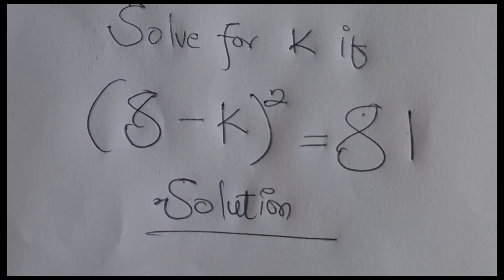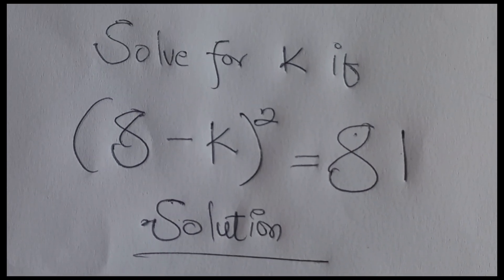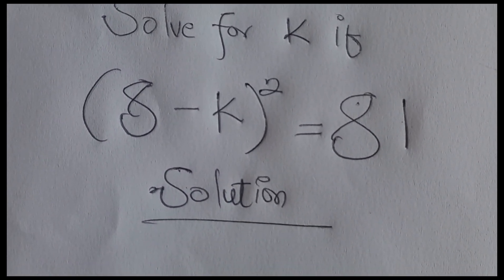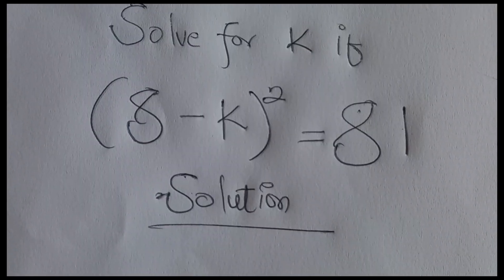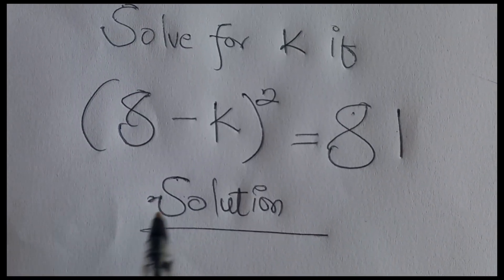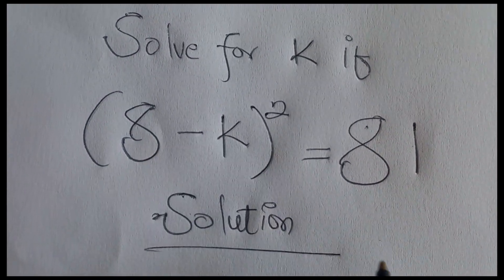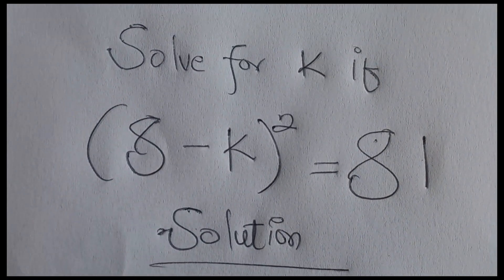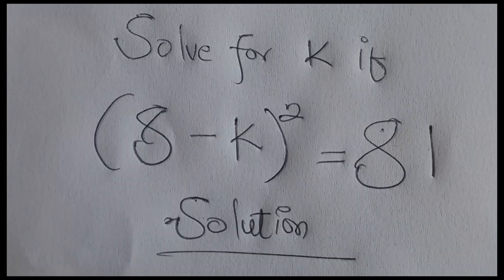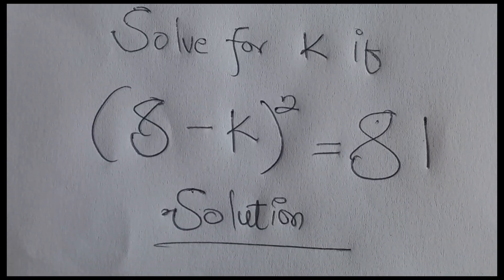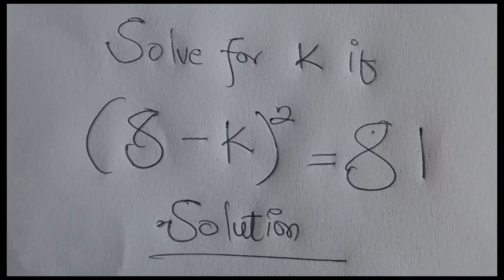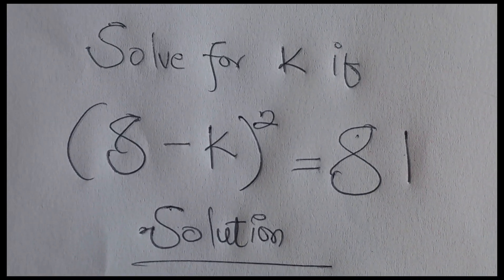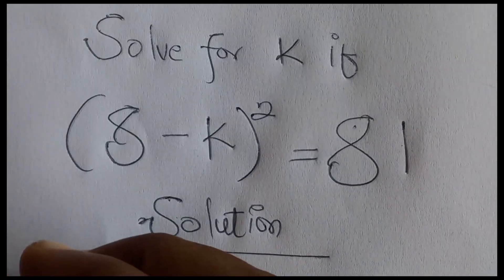Hello guys, welcome back once again. Today we are solving for k if (8 minus k) squared is equal to 81. I'm going to use two methods to solve this question.